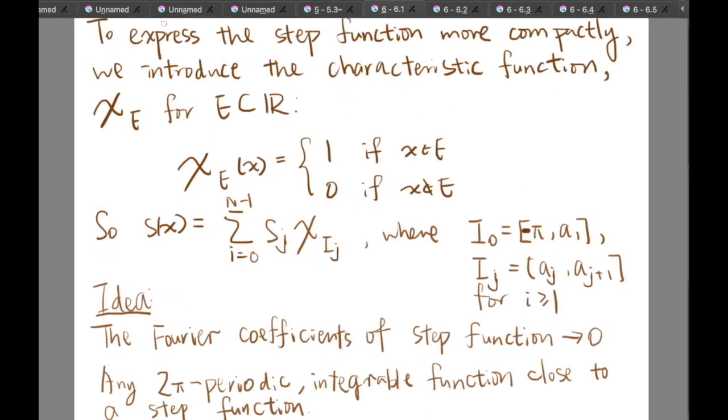The step function is not very elegant. So to express this step function more compactly, we will introduce the characteristic function χₑ for E which is a subset of ℝ, and χₑ(x) is defined to be 1 if x is inside E and 0 if x is not inside E. So you can readily see that the step function can be expressed in this form where I₀ is equal to the closed interval [-π, A₀] and Iⱼ is equal to [aⱼ, aⱼ₊₁] for j ≥ 1.